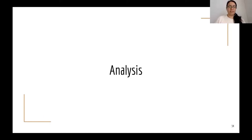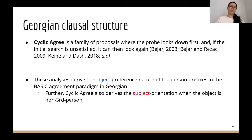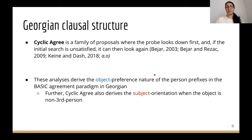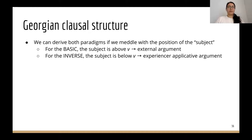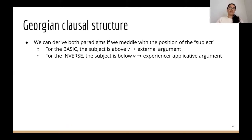For the analysis, I'm going to adopt cyclic agree analyses—the family of proposals where the probe first looks down, and if the initial search is unsatisfied it looks again. This derives the object preference of person prefixes in the basic, and via the cyclic nature can derive both patterns. Using these models, I can derive both paradigms by varying the position of the subject: for the basic, the subject is above little v in the external canonical argument position; for the inverse, the subject is introduced below little v in the canonical experiencer or applicative argument position in Spec-ApplP.